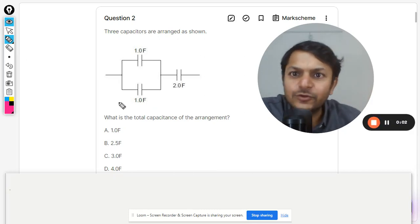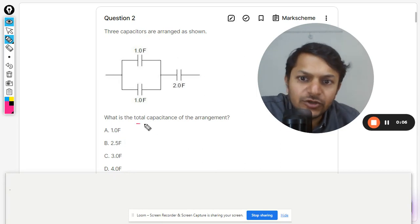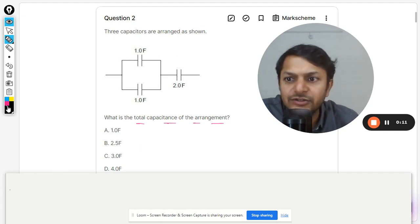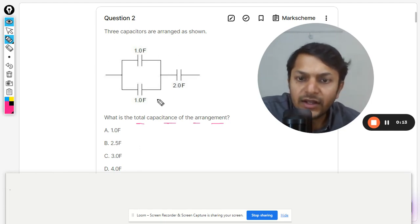Okay dear students, let us see what is there in this question. Three capacitors are arranged as shown. What is the total capacitance of the arrangement? So we want to find the total capacitance of the arrangement.